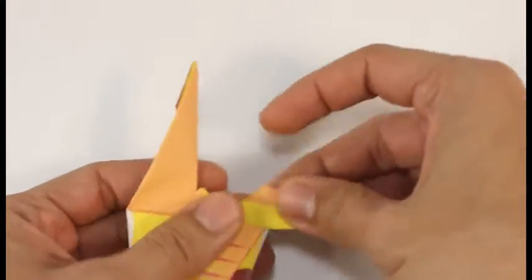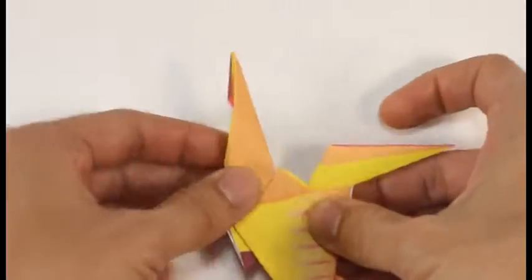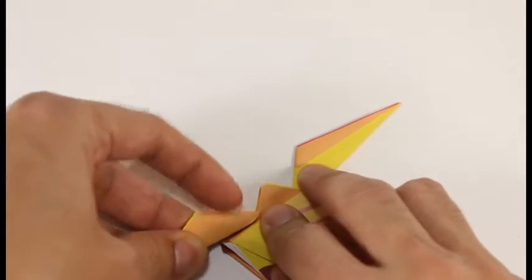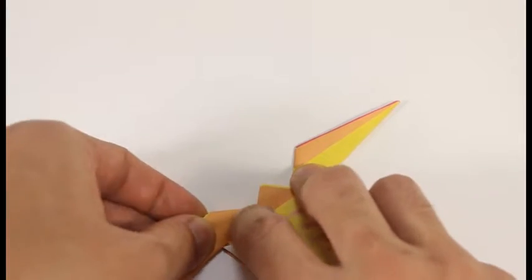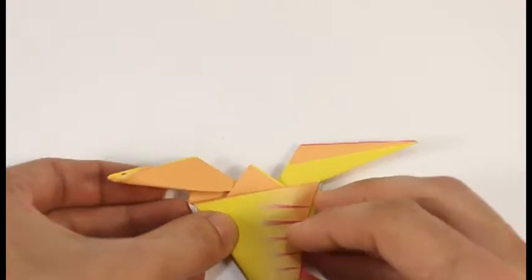And we're going to diagonally fold the top of the tail so that it lines up with the top of the wing. Do the same thing for the head and neck.